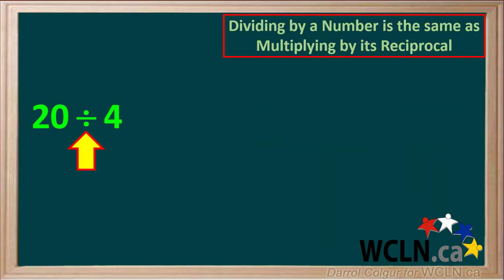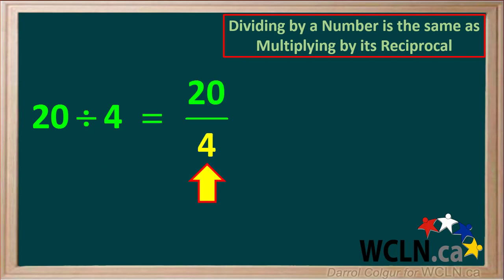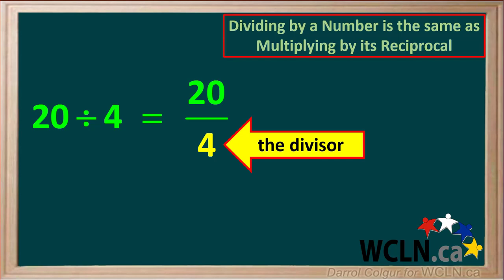Let's start with 20 divided by 4, which can also be shown as the fraction 20 over 4. Because this is the same as 20 divided by 4, we can call 4 the divisor.